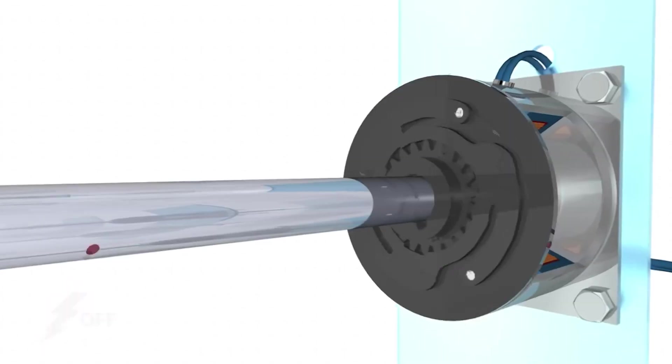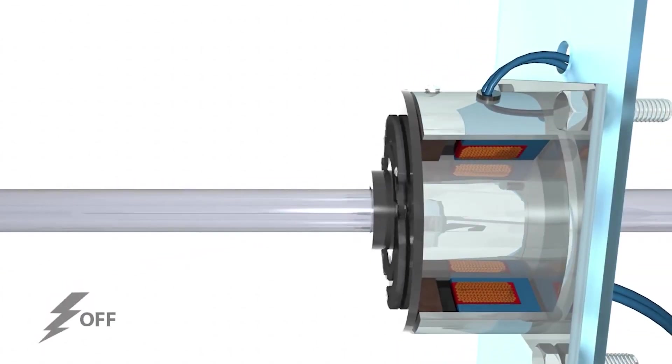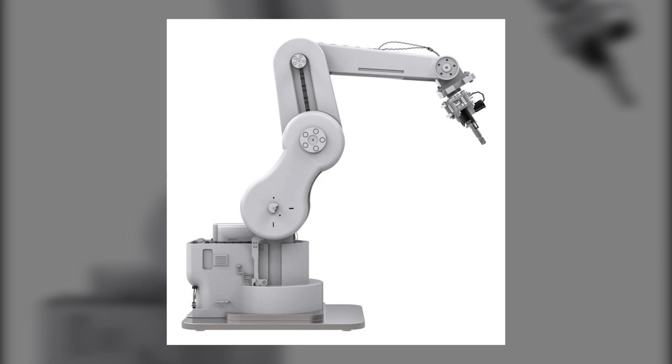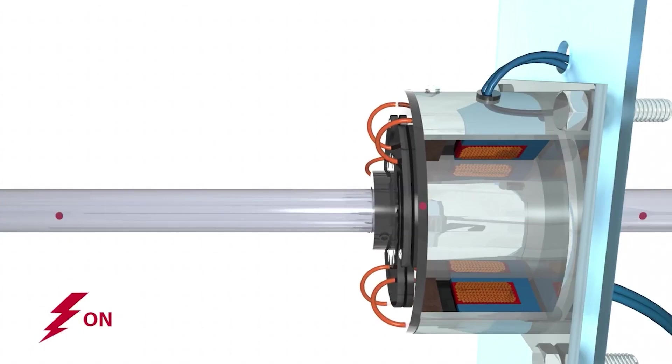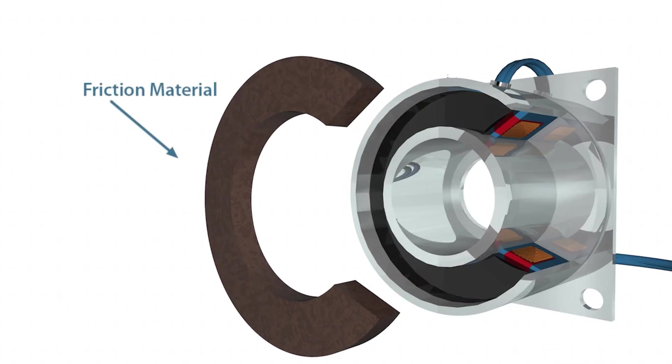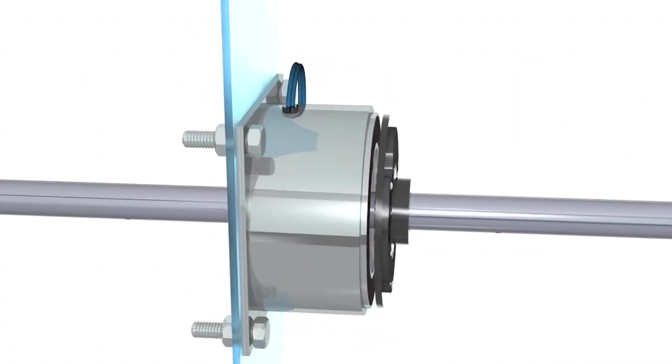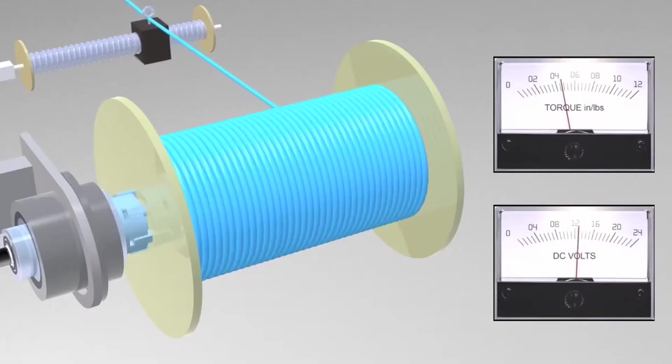This type of braking system is often used in industrial applications, such as in robotic arms and other machinery. The main advantage of using magnetic particle brakes is that they are much more efficient than traditional brakes. They also require less maintenance and are much quieter than traditional brakes.